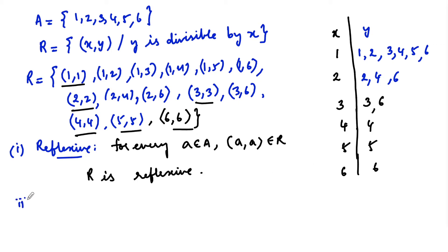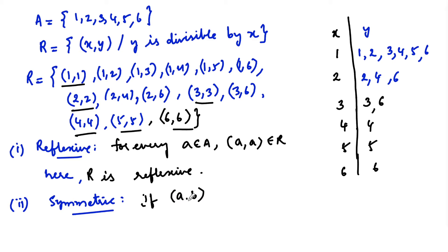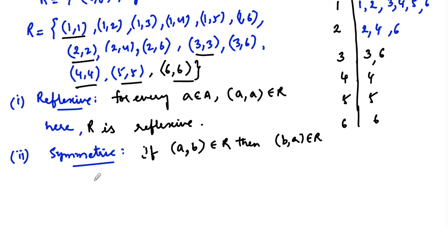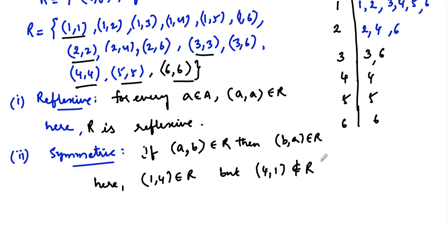Now let us check symmetric. The condition for symmetric is: if (a, b) belongs to R for a and b in set A, then (b, a) must also belong to R. For example, (1, 4) belongs to R since 4 is divisible by 1, but we don't have (4, 1) because 1 is not divisible by 4. So (4,1) does not belong to R, and hence R is not symmetric.